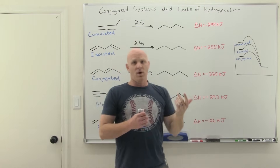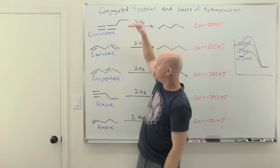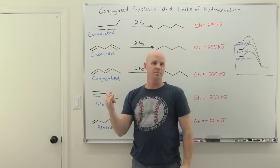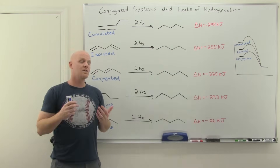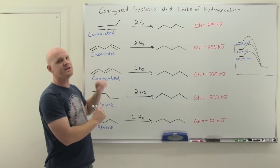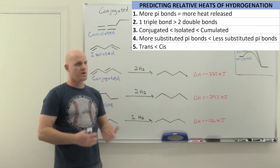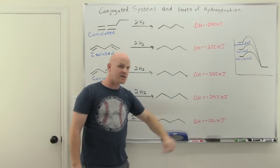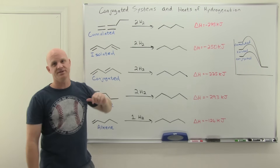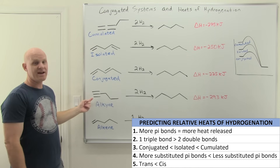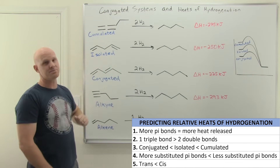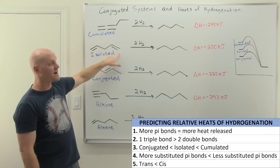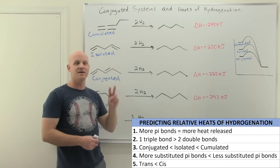We can now establish rules for comparing heats of hydrogenation. First, the more pi bonds you reduce, the more energy released. Second, reducing a triple bond releases more energy than reducing two double bonds, regardless of arrangement. Third, if reducing two double bonds, cumulated releases the most energy, then isolated, and then conjugated releases the least. These rules apply in order when making comparisons.